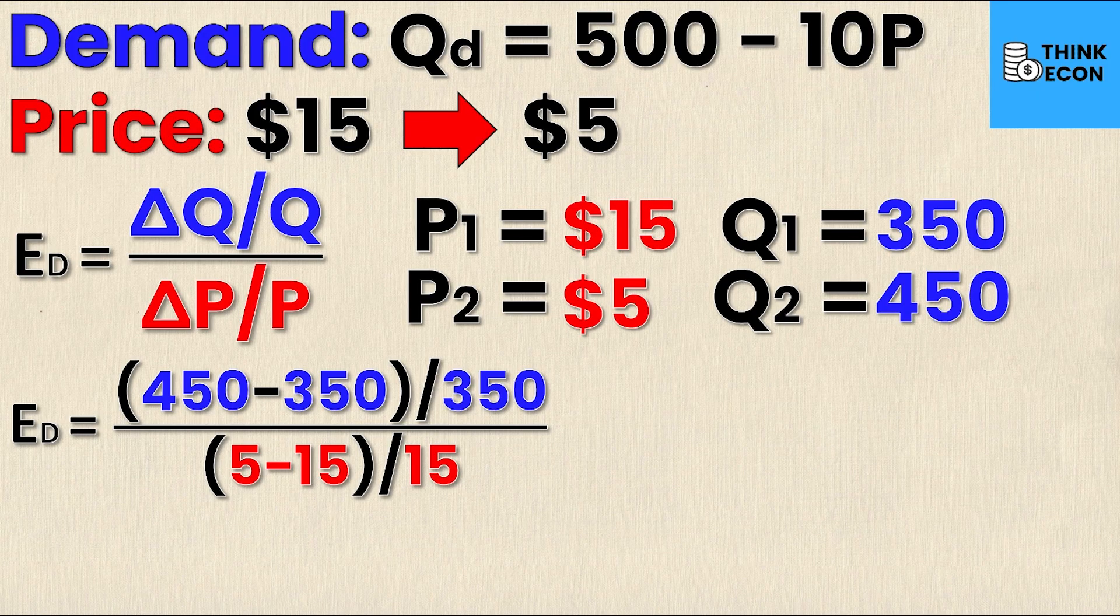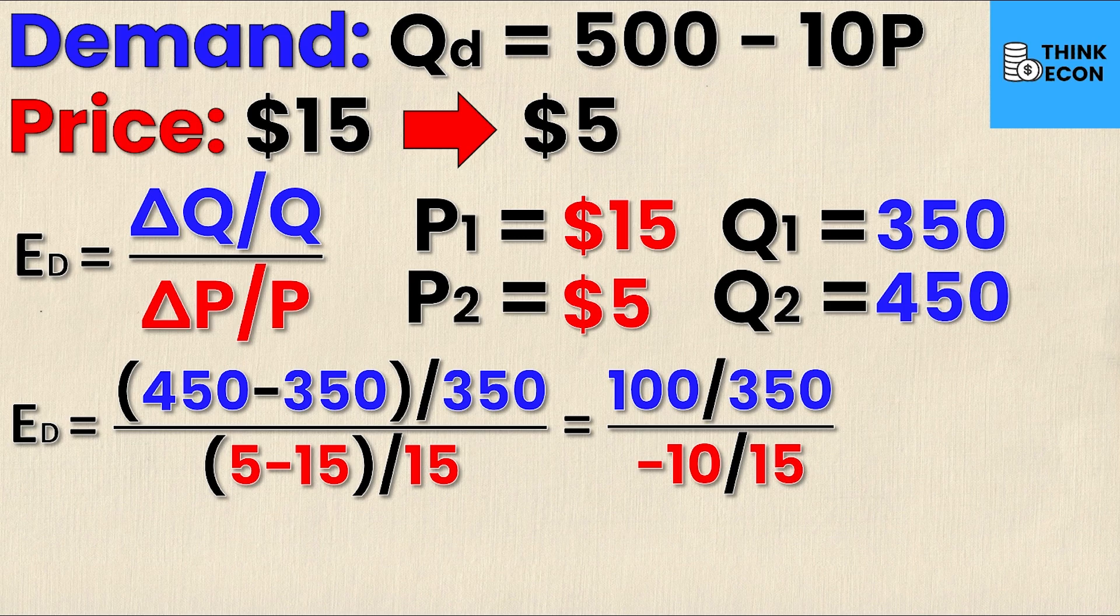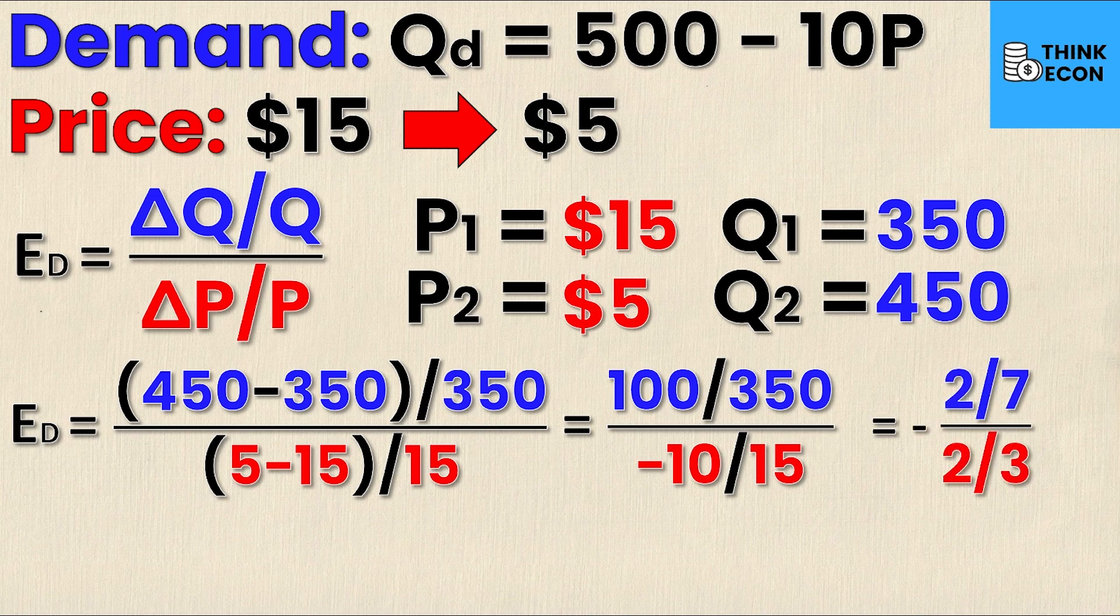Now all I need to do is simplify. Yes it looks confusing but it's not that complicated. The next line is going to give me 100 over 350—that's just 450 minus 350 which is 100—and then 5 minus 15 which is negative 10 over 15. And you'll notice that both the top and the bottom fractions can both be reduced. So I can reduce 100 over 350 to 2 over 7, and I can reduce 10 over 15 to 2 over 3, and of course that negative sign comes along for the ride.